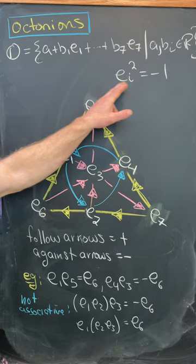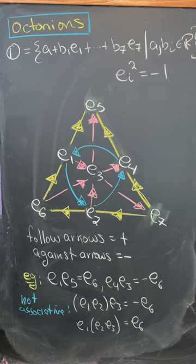And their multiplication can be described by the following diagram. So the rule here is if you follow the arrows in this diagram, you pick up a plus sign. And if you go against the arrows, you pick up a minus sign.